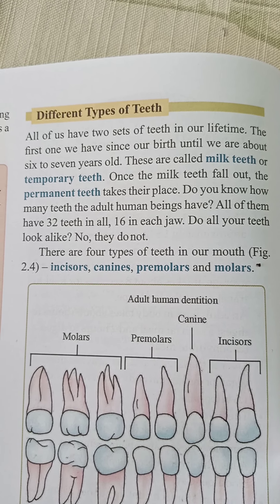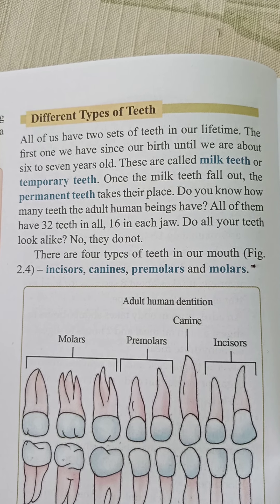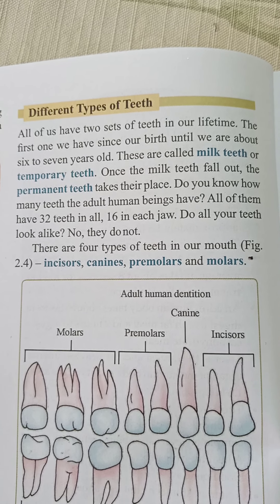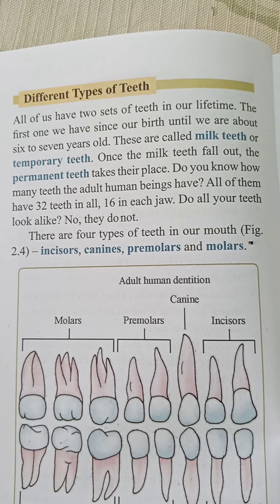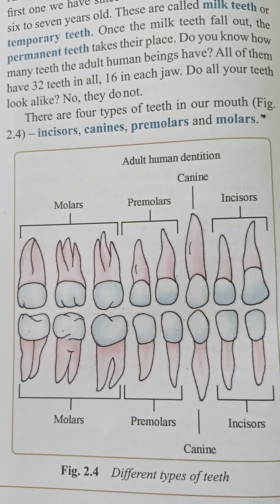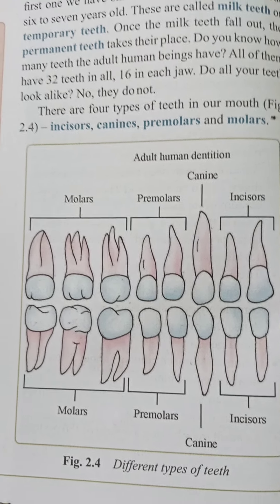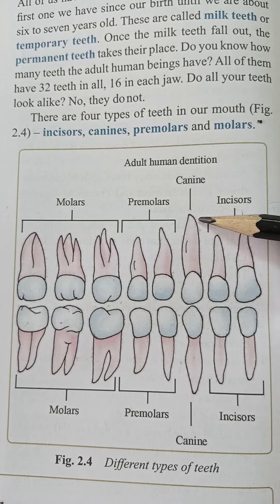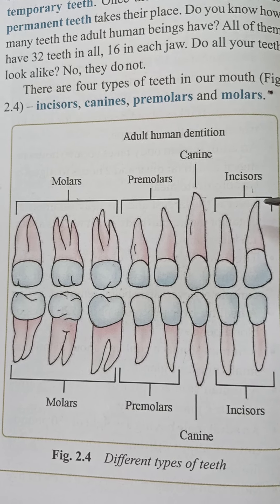Do all your teeth look alike? No, they don't. They are not all the same — they are of different types. There are four types of teeth in our mouth: incisors, canine, premolars, and molars.